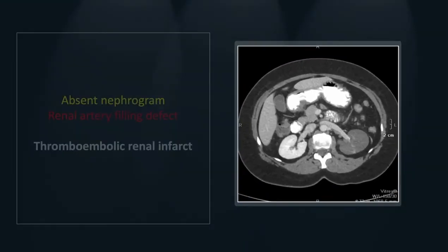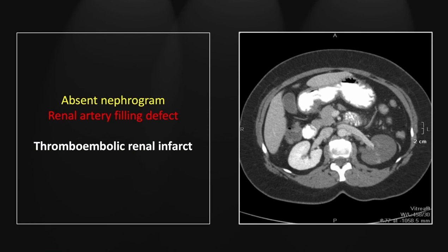Our next case is a straightforward thromboembolic renal infarct. I like this case because of the extent of loss of the left nephrogram and the visualization of a filling defect in the mid and distal left renal artery, which, although tortuous, is still viewed nicely in plane here.